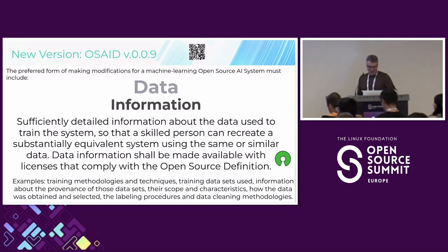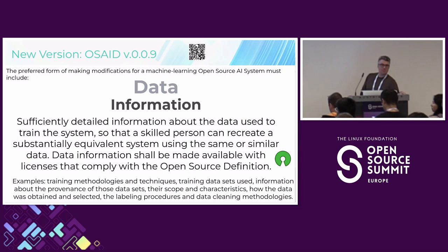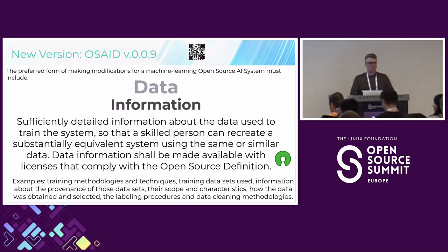Audience question: Because you said software and models are different, will we see different licenses for models? Hopefully — we already have different licenses being written specifically for data, for model weights and parameters. There is an ongoing conversation on the license review meeting list about expanding the scope of that volunteer group to include evaluating licenses for code, data, and model weights parameters.